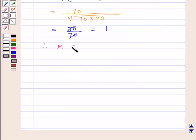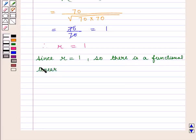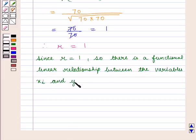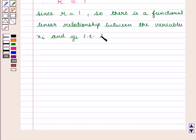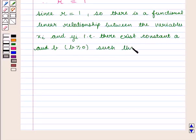Therefore coefficient of correlation is given by 1. Since r is equal to 1, so there is a functional linear relationship between the variables xi and yi. That is, there exist constants a and b where b is greater than or equal to 0 such that yi is equal to a plus b xi.